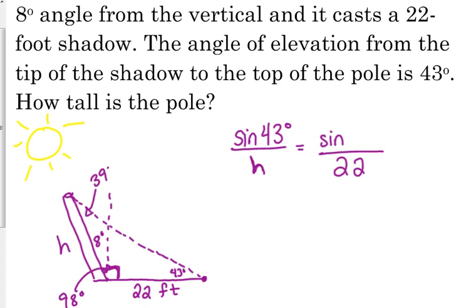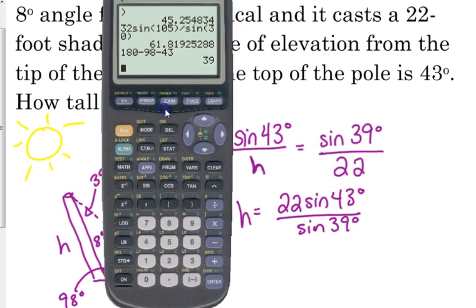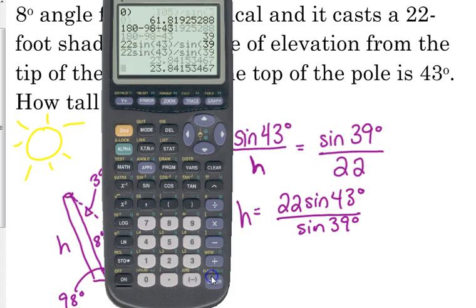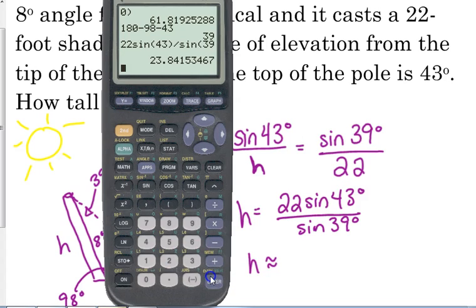Why did I put an H right there? Why did I put an H there? Because that's what we're looking for. We want to know how tall is the pole. So, that's 39 degrees. So, H is equal to 22 sine of 43 degrees over the sine of 39 degrees. And this is an aggregation problem. We want the exact value. So, we crunch the numbers. 22 sine of 43 divided by the sine of 39. We get that it is approximately 23.842 feet tall.